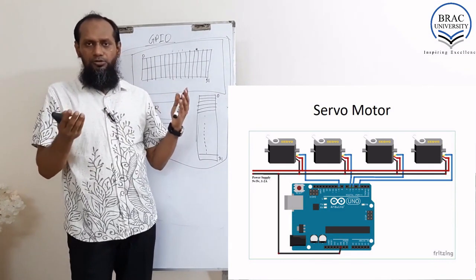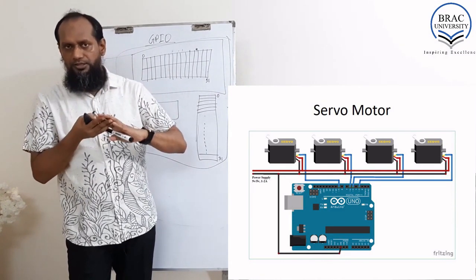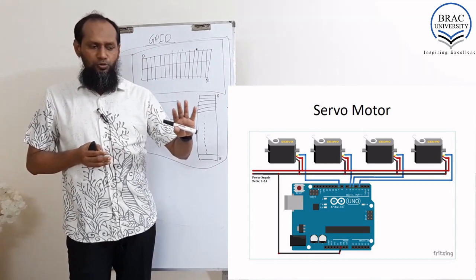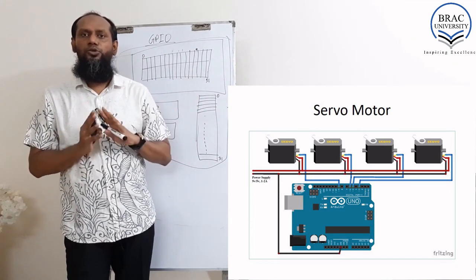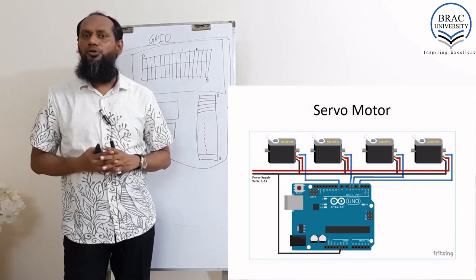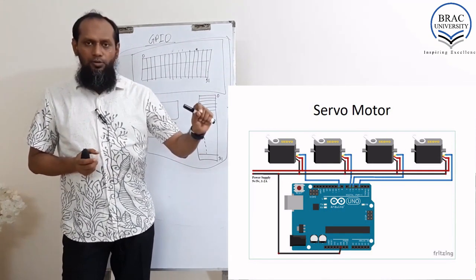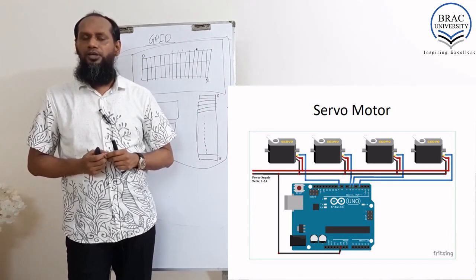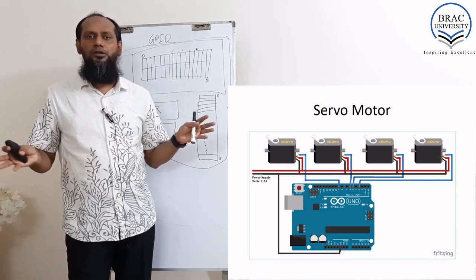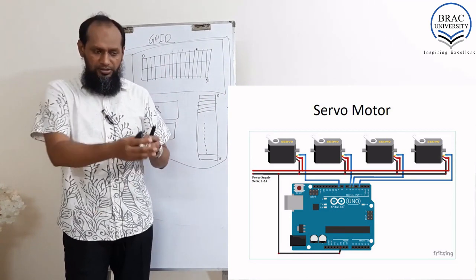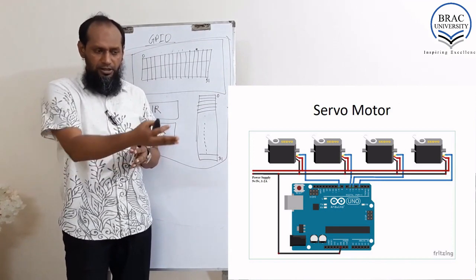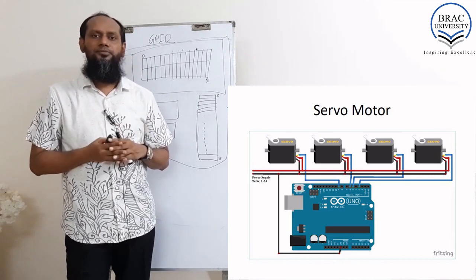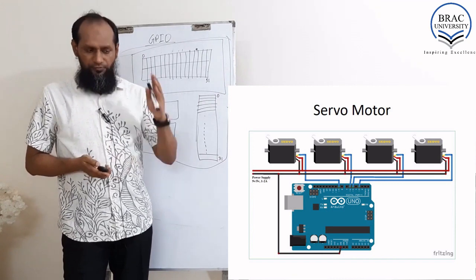Now, the servo motor. A servo motor has three pins. One is from the actual controller — specifying how many degrees it will turn — and the other two are directly connected with VCC and ground. So no motor driver is required for the servo motor. For the data pin, we just send data and the servo receives it. The data pin gives information about how many degrees of rotation to perform.